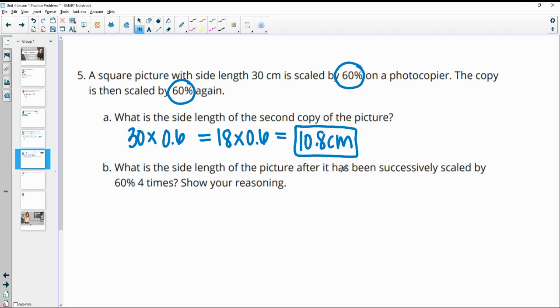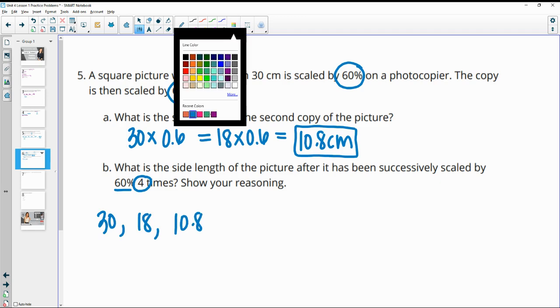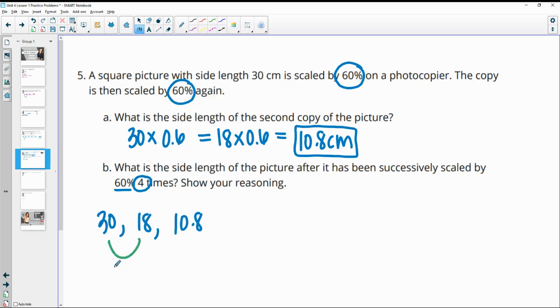So what is the side length of the picture after it's been successively scaled 60% four times? So this is after two times, right? So it went 30 and then it went 18 and then it went 10.8 where each time we are multiplying by 60% or 0.6.